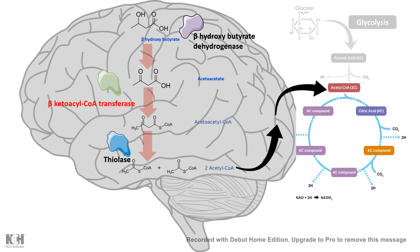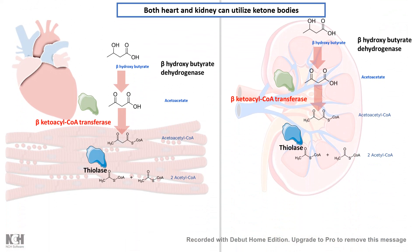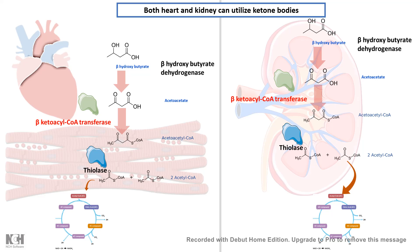The brain really doesn't care where it gets the acetyl-CoA from. Once it has acetyl-CoA, it can channel it into the TCA cycle to get energy. That is how even in the starved state, the brain doesn't stop functioning and can still get the energy it needs. The same situation is valid for the heart and the kidneys, where with the help of the same enzymes, ketone bodies are broken down and the acetyl-CoA is utilized in the TCA cycle to produce energy. This pretty much summarizes how ketone bodies are utilized in the extra-hepatic tissues during starvation, and how the body senses an energy deficit and starts producing and utilizing ketone bodies.